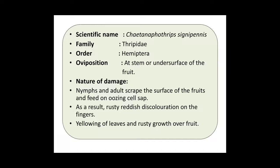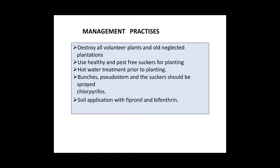Nature of Damage of Fruit Rust Thrips: nymph and adult scrape the surface of the fruits and feed on cell sap. As a result of feeding, rusty reddish discoloration appears on the fingers, yellowing of leaves, and rusty growth over the fruit. Management Practices: destroy all volunteer plants and old neglected plantations, use healthy and pest-free suckers for planting, hot water treatment prior to planting, and soil application with fipronil and bifenthrin.